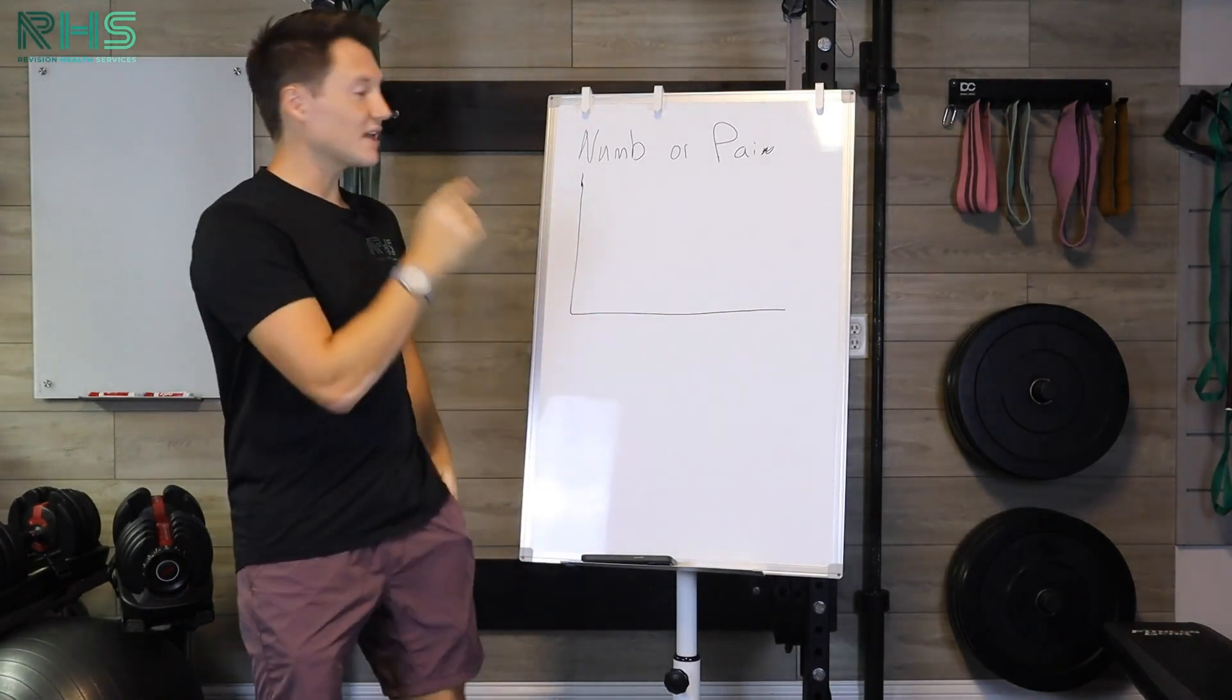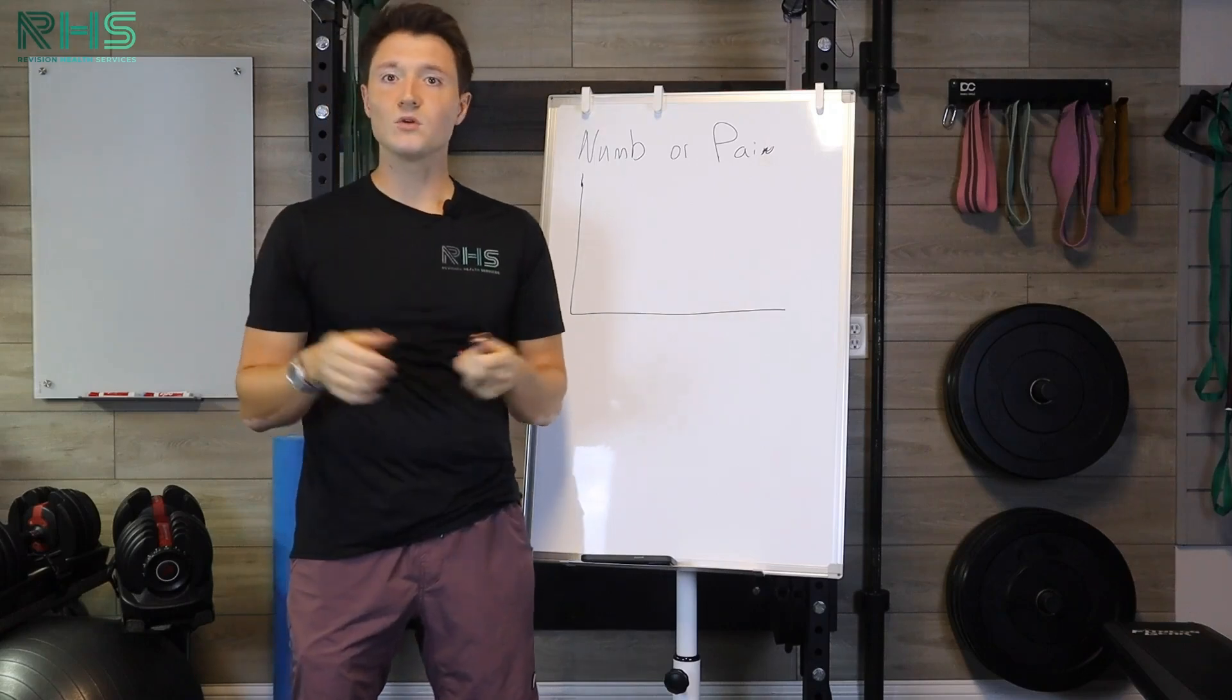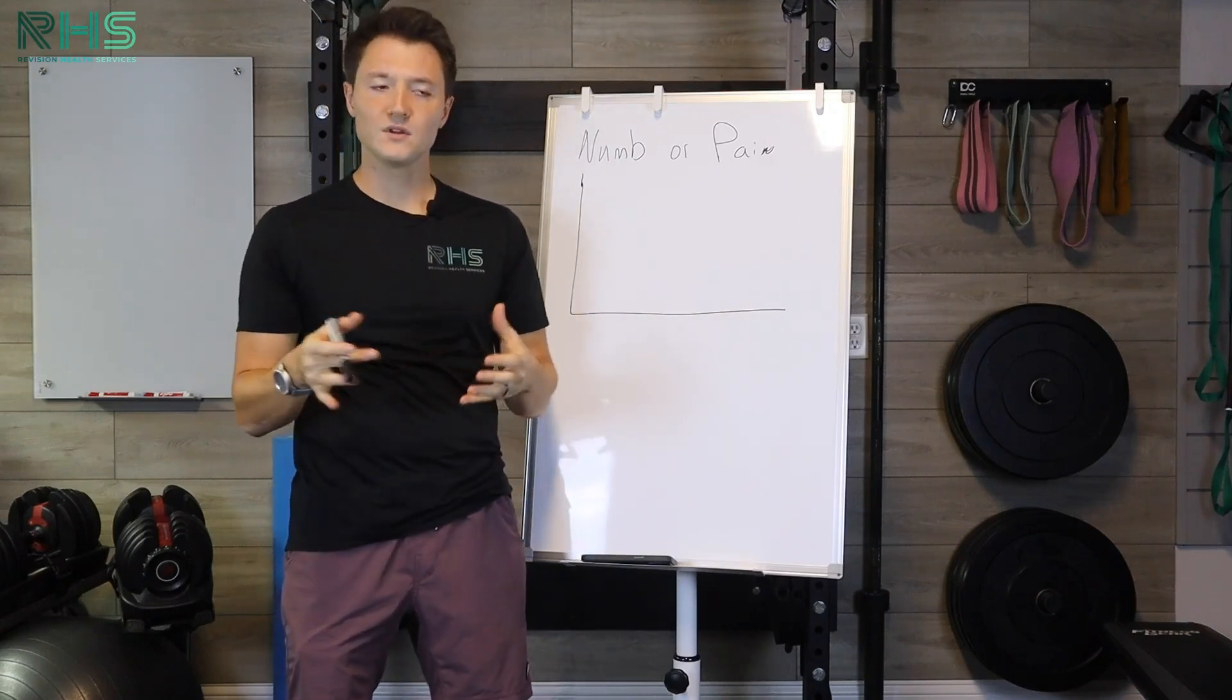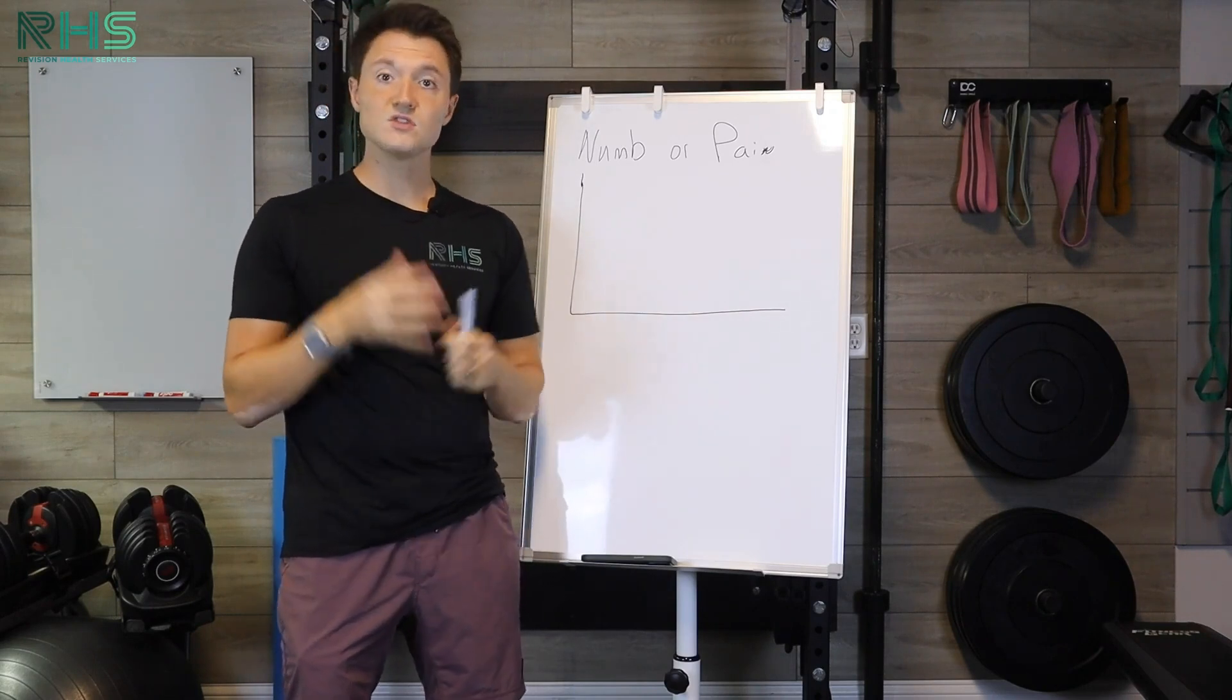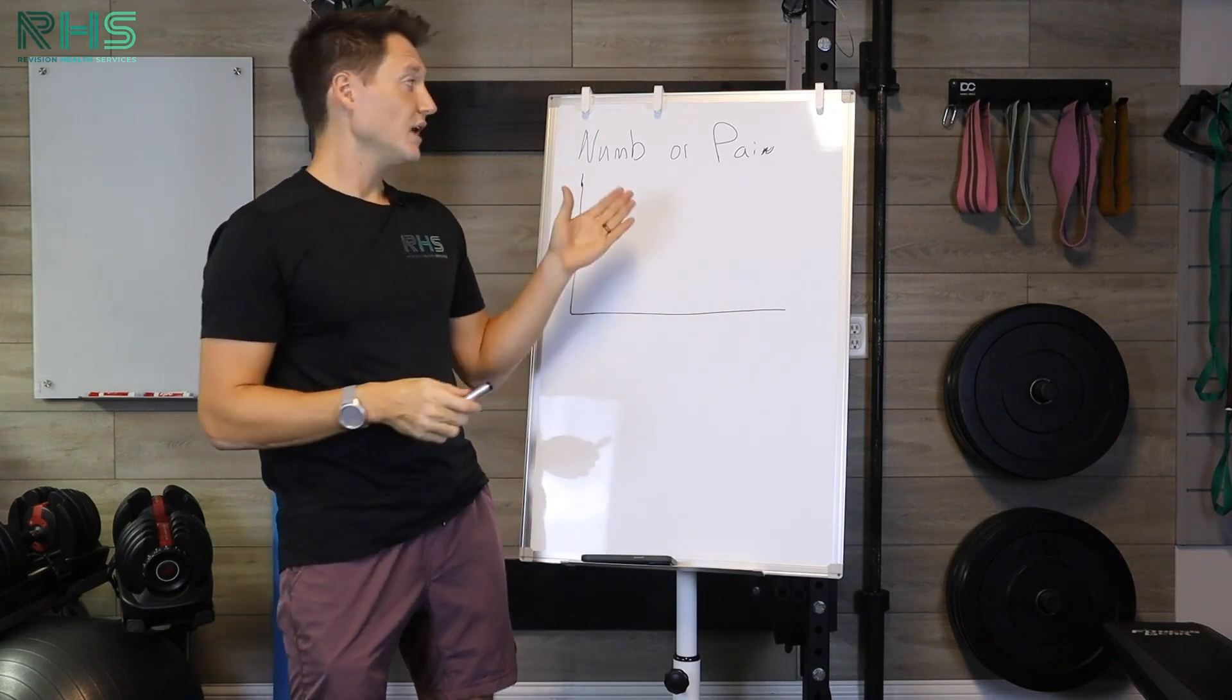So when I'm talking about sciatica and numbness and pain, there are different parts of the spinal cord that are responsible for that, or the nerve roots. So the nerve has different responsibilities. And so two of those responsibilities are pain and numbness.